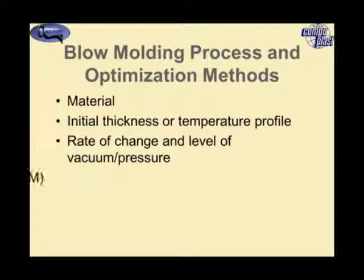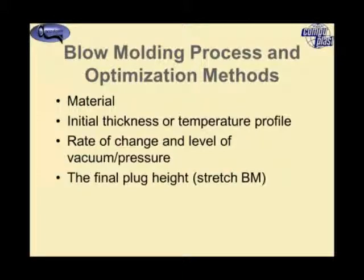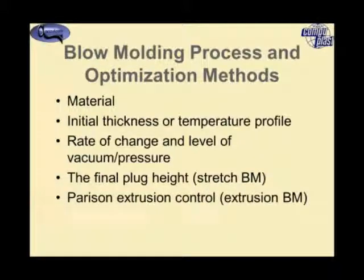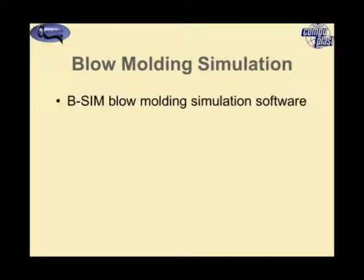We can control process parameters such as the rate of change or level of vacuum or pressure in the process. For stretch blow molding, we have control of the stretch rod speed and final position. In parison extrusion, we have parison extrusion control in which we can control the thickness of the parison while it is being extruded, and there are many more ways of adjusting the initial shape to optimize the process.